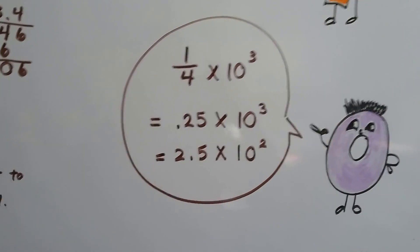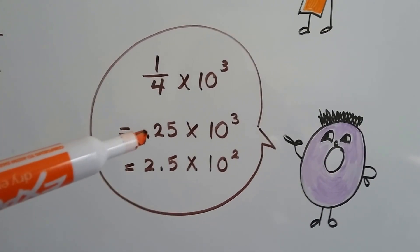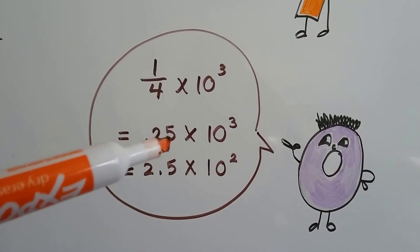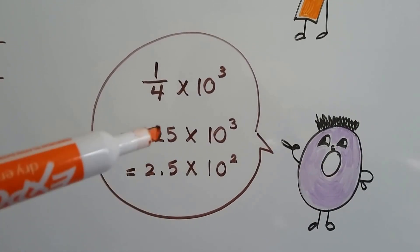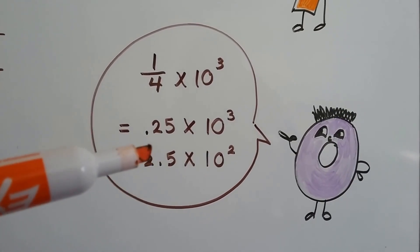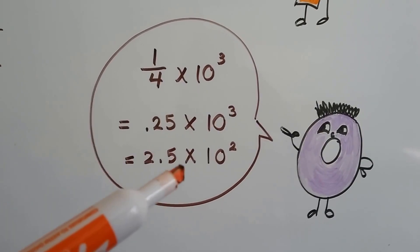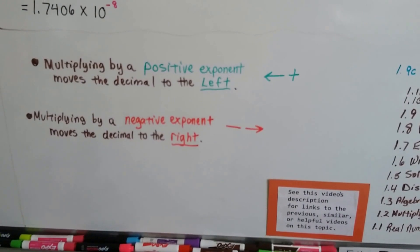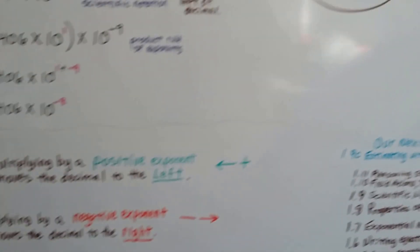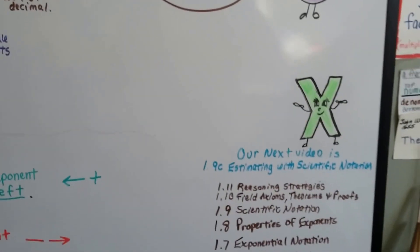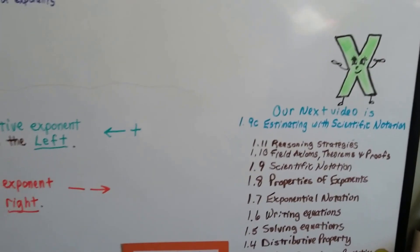Take a look at this: if we've got a fraction, we know 1 fourth is 0.25 in decimal form. But because we need one digit to the left of the decimal, this should be 2.5 times 10 to the second — not 10 to the third — because we moved the decimal to the right, which means we subtracted an exponent. Our next video is 1.9c, and we're going to talk about estimating with scientific notation.